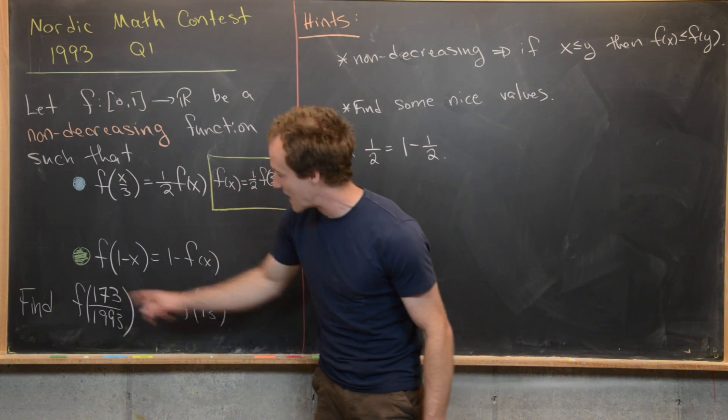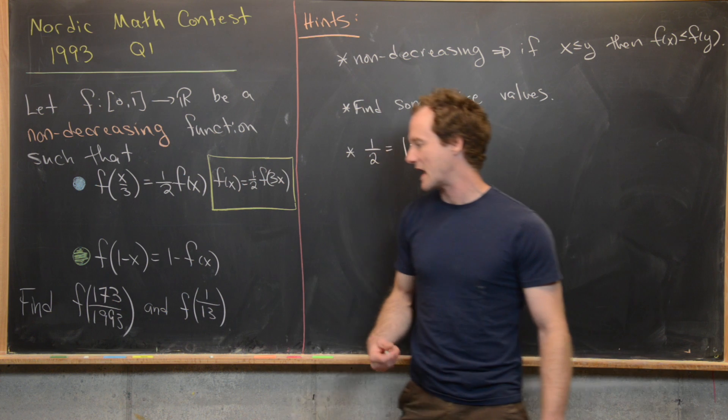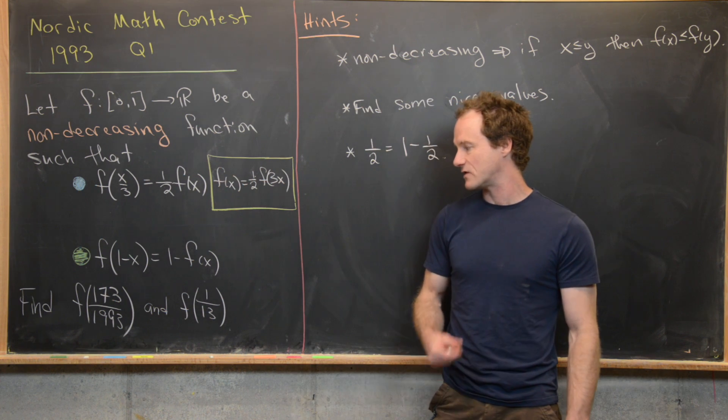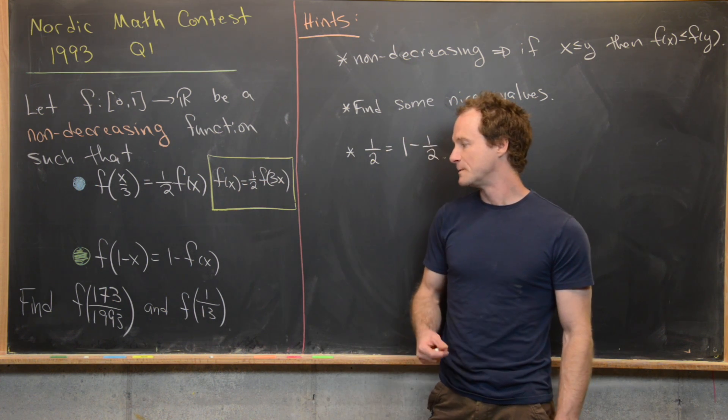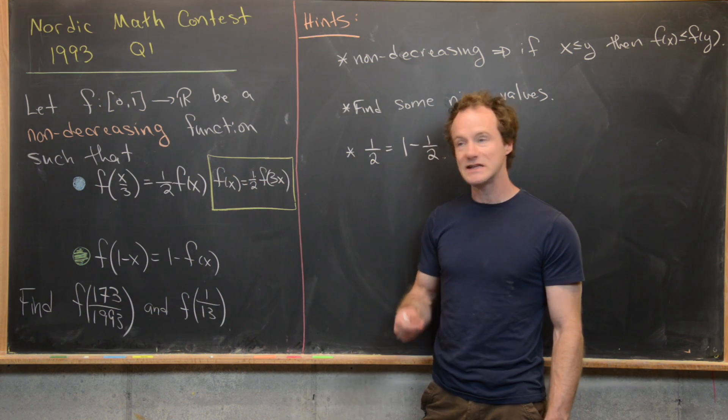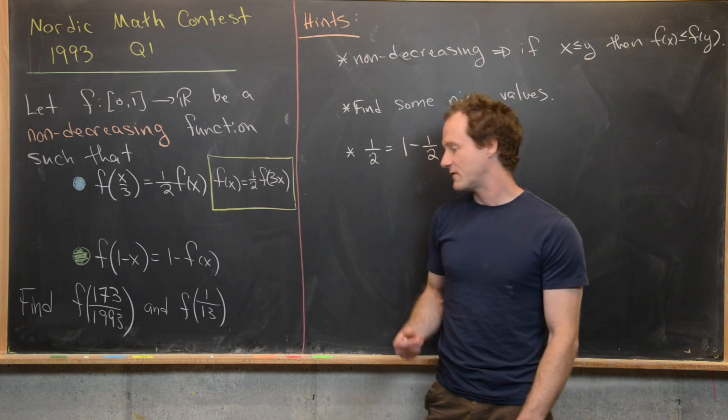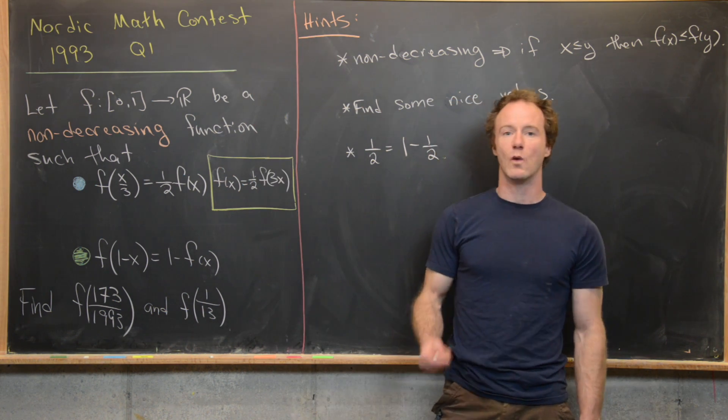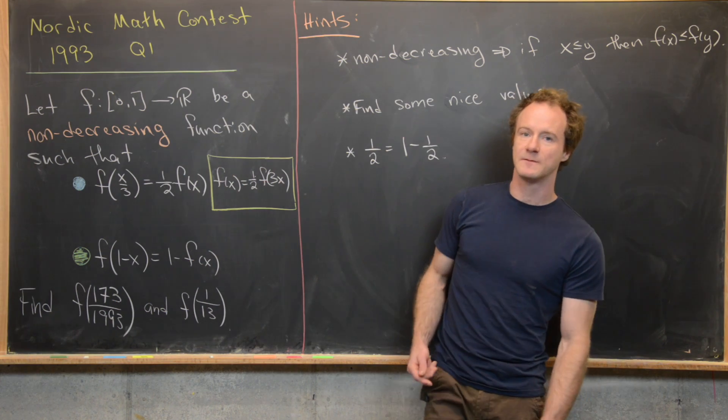Using these two facts, find the following values of f: f evaluated at 173 over 1993, and f evaluated at one thirteenth.